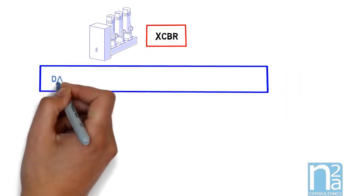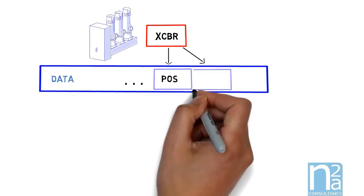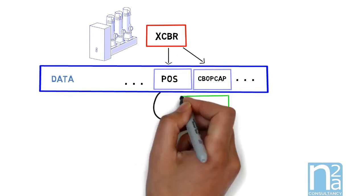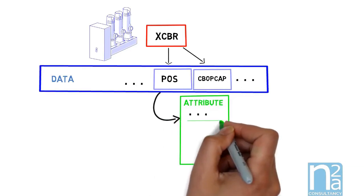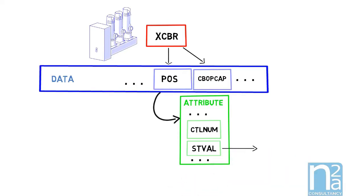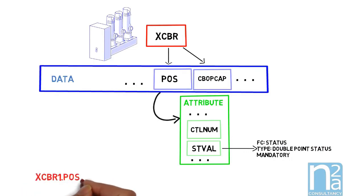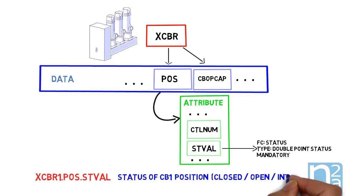Each logical node contains a certain number of data. For example, a circuit breaker has a data called Pos which represents its position. Data has data attributes which specify parameters. Here we have stVal which represents the status value of the position: closed, open and intermediate. Data attributes belong to a function class, for example here it is a status. Data attribute also has a type, here it is dbpos, double point status: open, close, intermediate. And it is specified if this attribute is mandatory, optional or conditional. This one is mandatory. It means that every vendor should implement this data attribute in their IEDs.